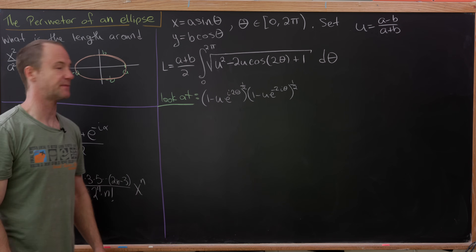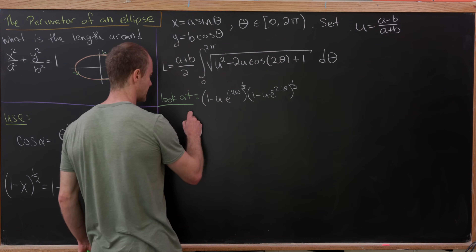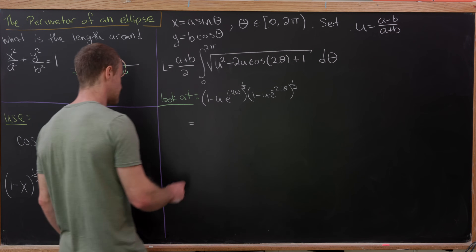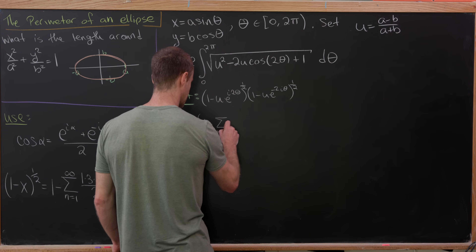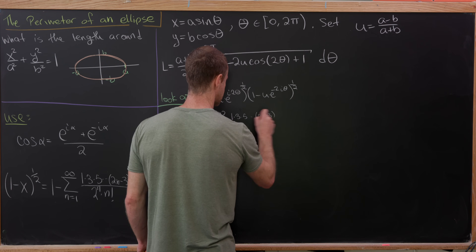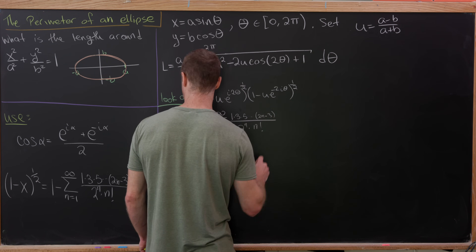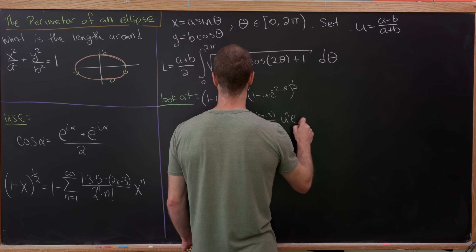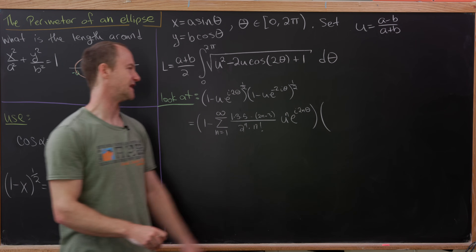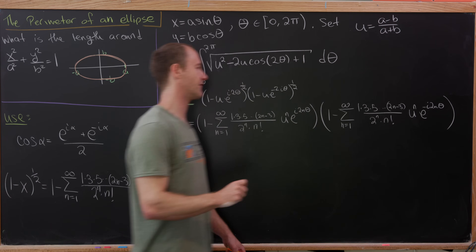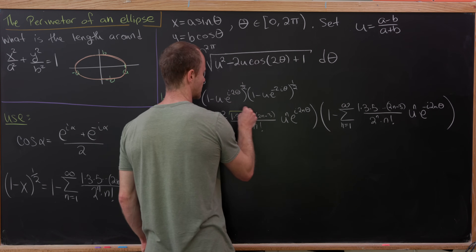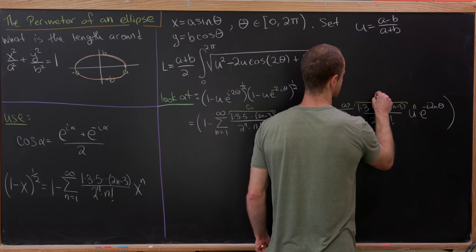We can now expand each binomial factor to the half power using our power series. The first factor (1 − u e^{i2θ})^{1/2} gives 1 minus the sum as n goes from 1 to infinity of c_n u^n e^{i2nθ}, where c_n = (1 × 3 × 5 × ⋯ × (2n−3)) / (2^n × n!). The second factor gives the same series with e^{−i2nθ}.